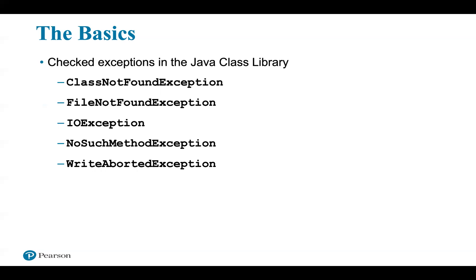Checked exceptions are the result of a serious occurrence during program execution. For example, if the program is reading data from a disk and the system cannot find the file that contains the data, a checked exception will occur. The name of the class to which this exception belongs is FileNotFoundException. A well-written program should anticipate this event and recover gracefully, perhaps by asking the user to enter the file name again. Common practice is to describe an exception by its class name — for example, we might say that a FileNotFoundException has occurred.